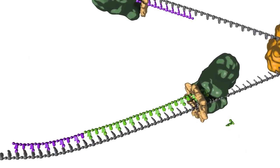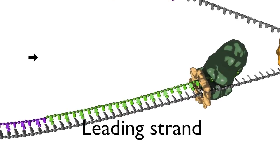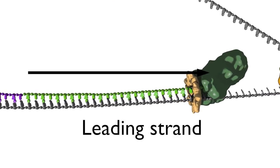The bottom strand in this fork is the leading strand. The polymerase on this strand moves continuously from left to right, synthesizing DNA as it travels.